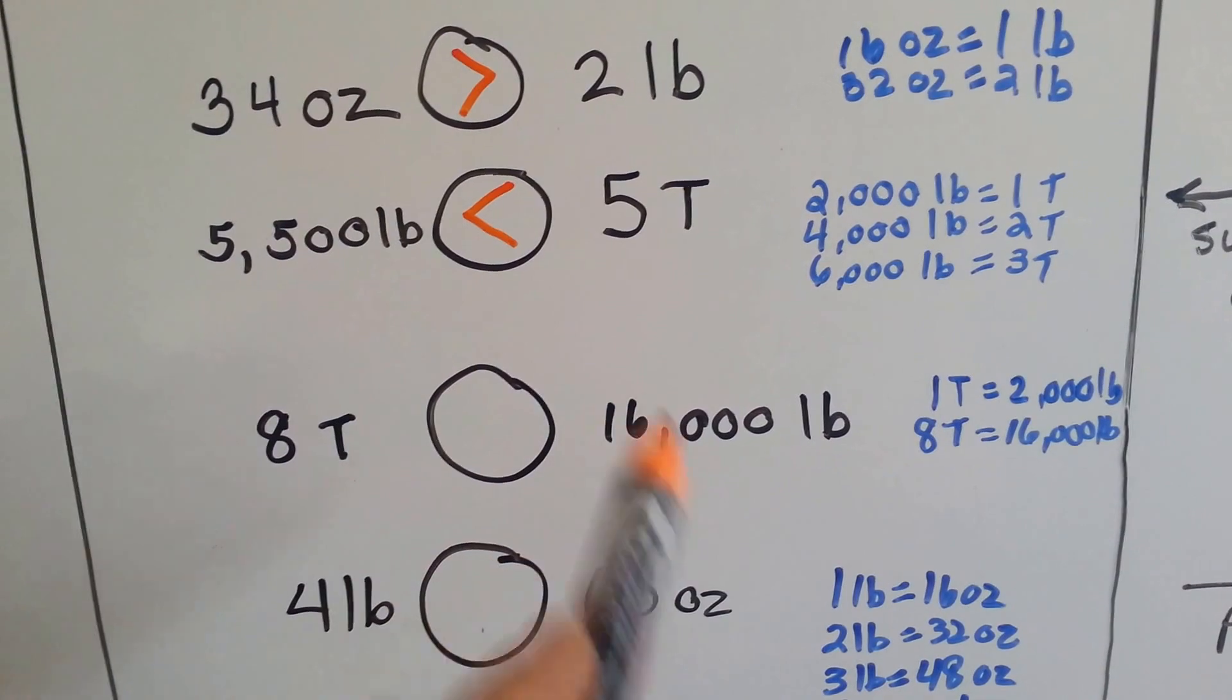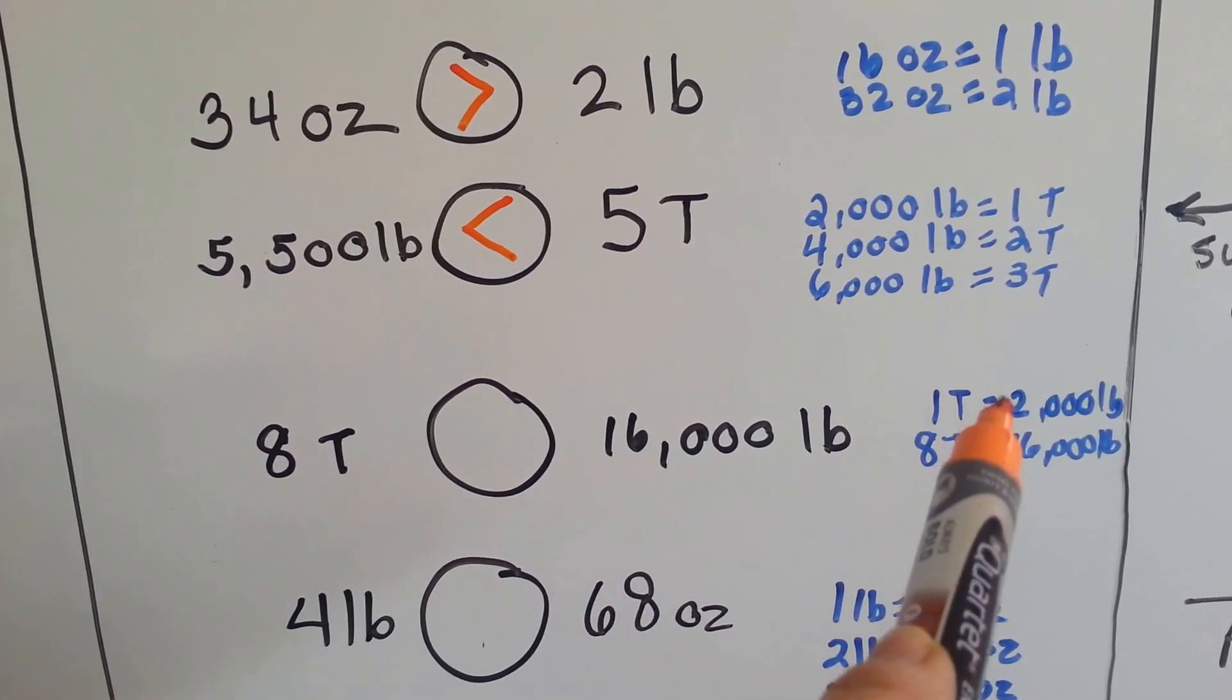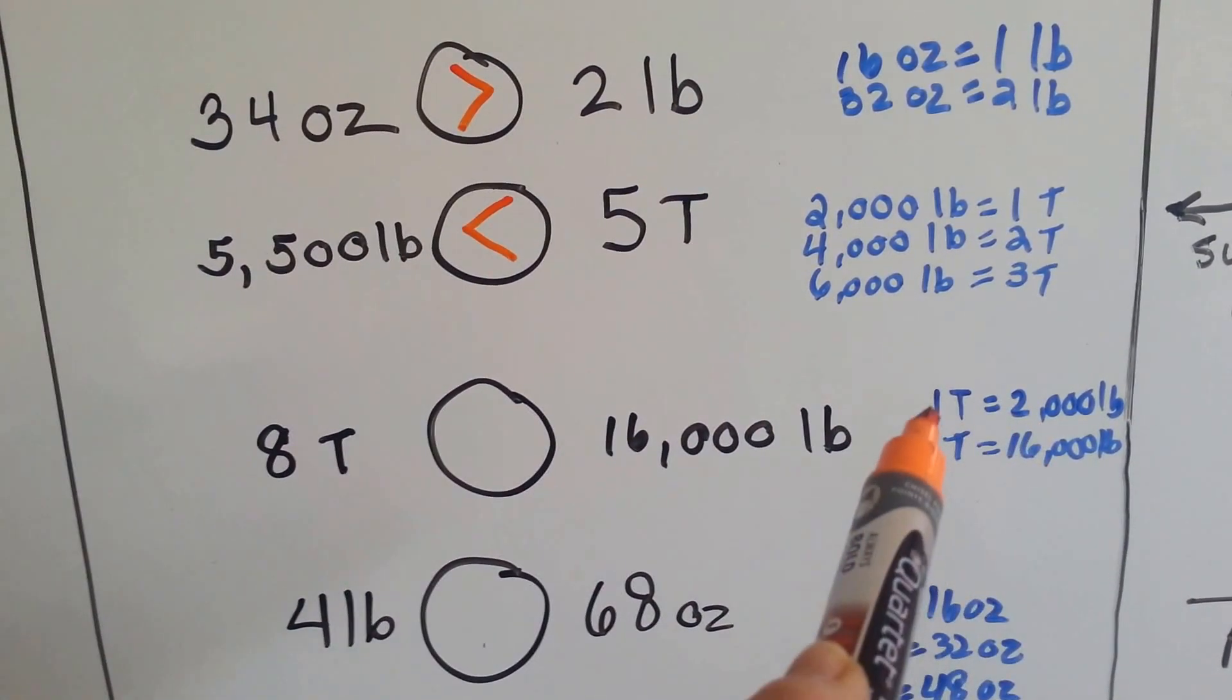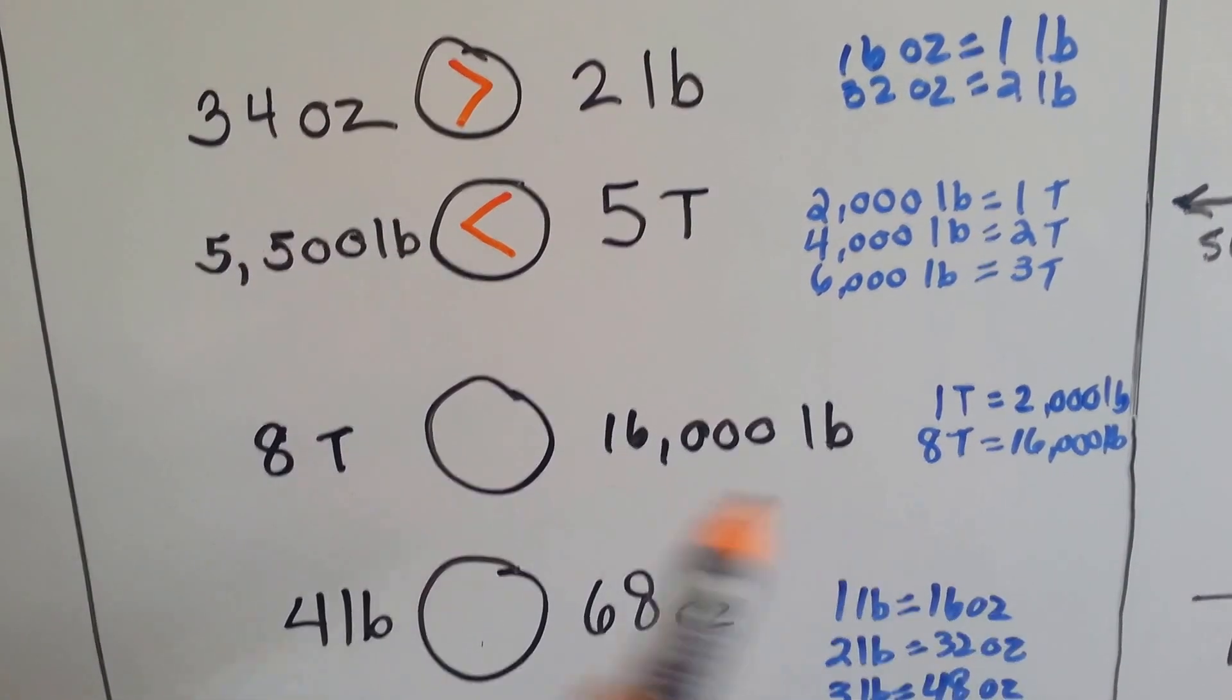8 tons or 16,000 pounds? Well, 1 ton is equal to 2,000 pounds. That means 8 tons is equal to 16,000. They're equal.